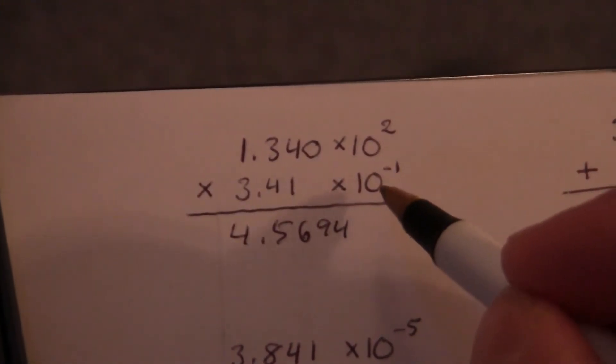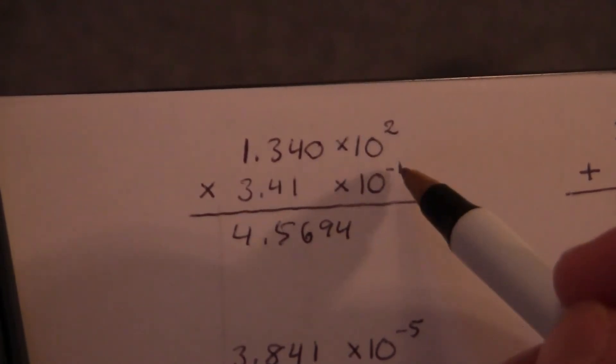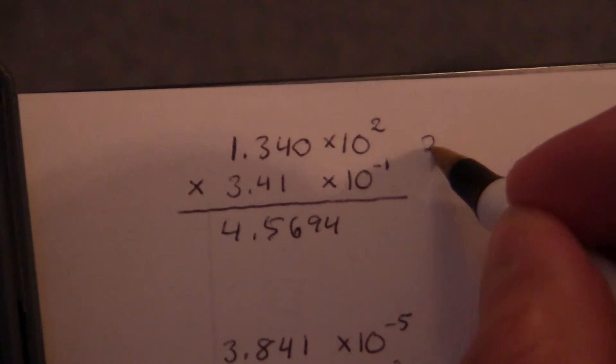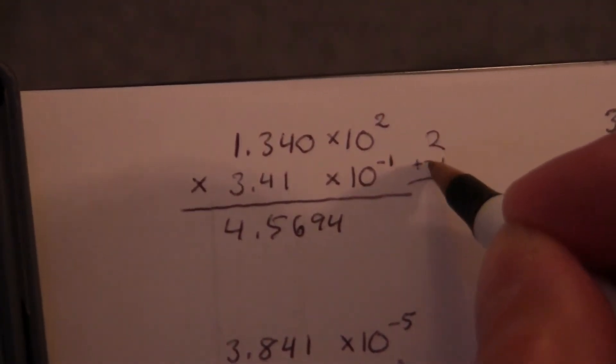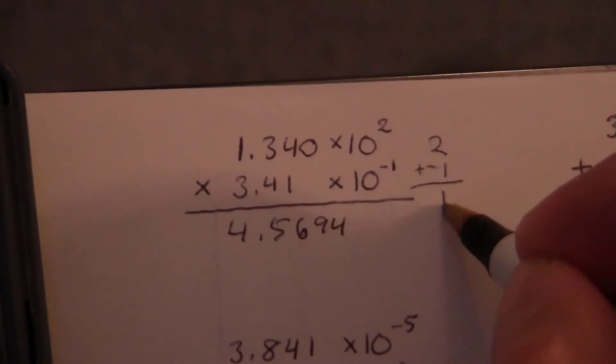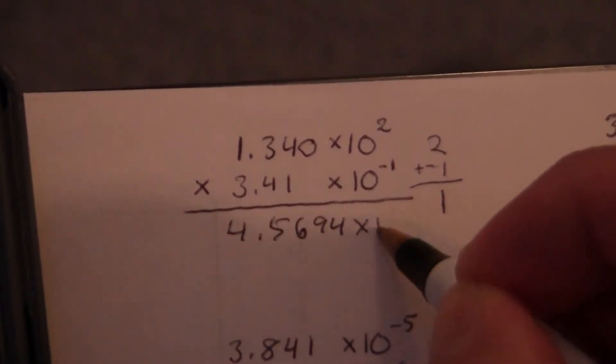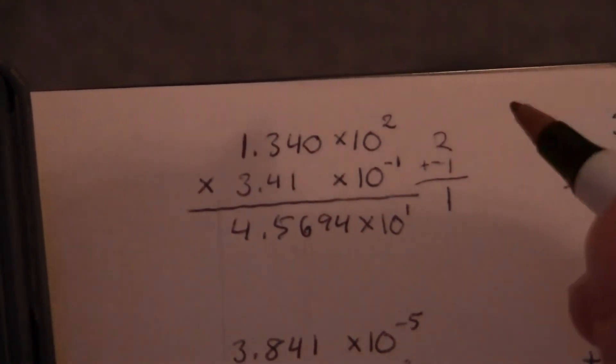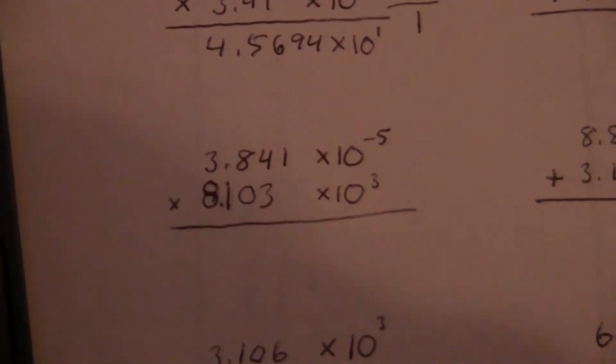We're going to look at this part. When we're multiplying we do what with the exponents? We add them. So we're going to take two added to a negative one. Now that negative makes it take one away from the two and you end up with one. So this will be times ten to the one. And we'll just leave it like that.